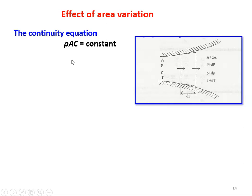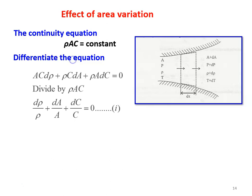From the continuity equation, which we discussed in the earlier lecture: rho·A·C equals constant. The mass flow rate is constant through the variable area device. Differentiating: A·C·d-rho plus rho·C·dA plus rho·A·dC equals zero. Dividing the entire equation by rho·A·C, it becomes d-rho/rho plus dA/A plus dC/C equals zero. This is the differential form of the continuity equation, equation number one.